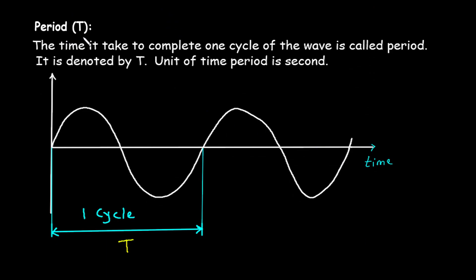Next is period or time period, represented by capital T. The time it takes to complete one cycle of the wave is called the period. This is the positive half cycle and this is the negative half cycle, combined called one cycle. The unit of time period is seconds.